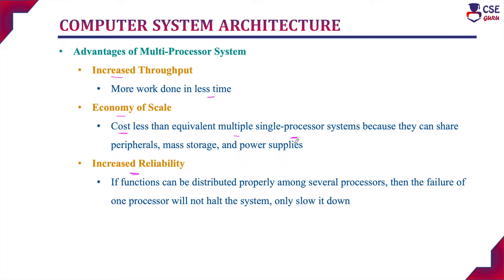In a single processor system, peripheral devices are utilized by only one processor. But in a multiprocessor system, many processors share the same peripheral devices. So the cost is less because they share peripheral storage and power supplies. For increased reliability, since we are distributing work among several processors, if there is a failure in one processor it will not halt the system. It will only slow down. The task of the failed processor will be taken up by the other processors, so it will not halt the complete system.